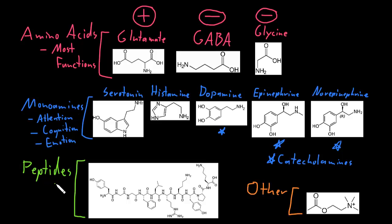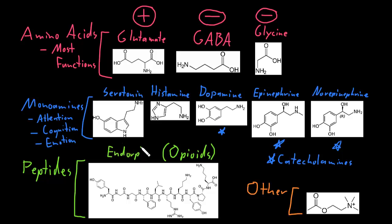There are many important peptide neurotransmitters, including a group called the opioids. The opioids are a group within the bigger group of peptide neurotransmitters — endorphin is one example. The peptide neurotransmitters play a role in many functions of the nervous system, but the opioids in particular play a big role in our perception of pain, and a number of pain medications affect the opioid neurotransmitters.